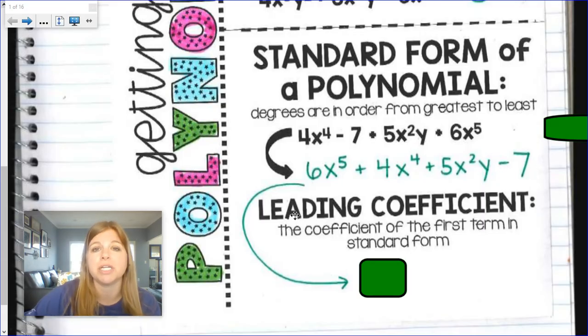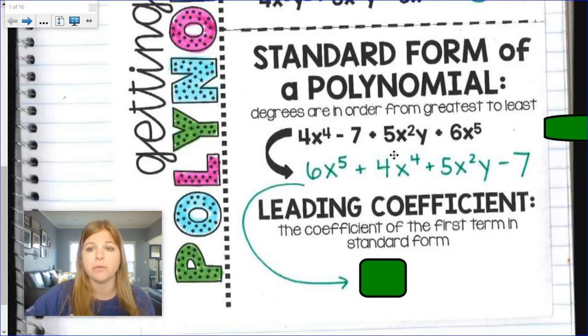Leading coefficient. Leading coefficient is kind of like the line leader. So if I said to my class, hey, line up, tallest person to shortest person, that would be standard form. It would be this degree. And now the line leader is the coefficient of my first term in standard form. Only in standard form.